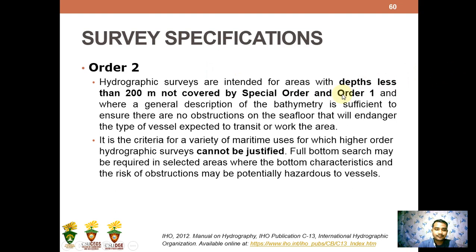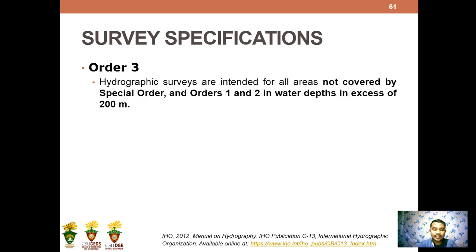Order 3 hydrographic surveys are intended for all areas not covered by Special Order, Order 1, and Order 2 — in depths exceeding 200 meters. Once the depth exceeds 200 meters and the area is not covered by the specifications of Order 1 or Order 2, it falls under Order 3.